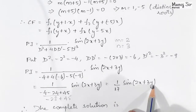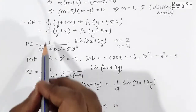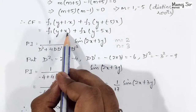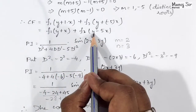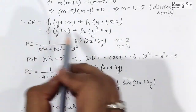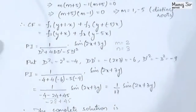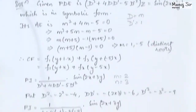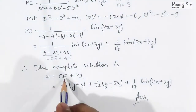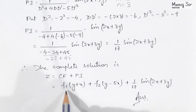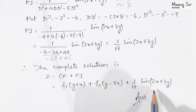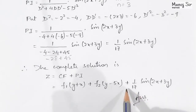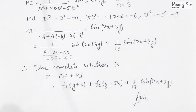The PI is (1/17) sin(2x + 3y), and the CF is f1(y + x) + f2(y - 5x). The complete solution is z = CF + PI, that is: z = f1(y + x) + f2(y - 5x) + (1/17) sin(2x + 3y). This is the final answer. Thank you so much.